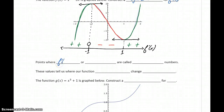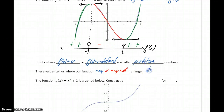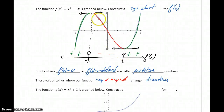Any points where f prime of x is equal to 0 — so our points at negative 1 and 1 here — or where the derivative is undefined, are called partition numbers. These values tell us where our function either may or may not change directions. In our first example, we found these partition numbers by looking at the graph and observing where we get the change from positive to negative or from negative to positive in the derivative.